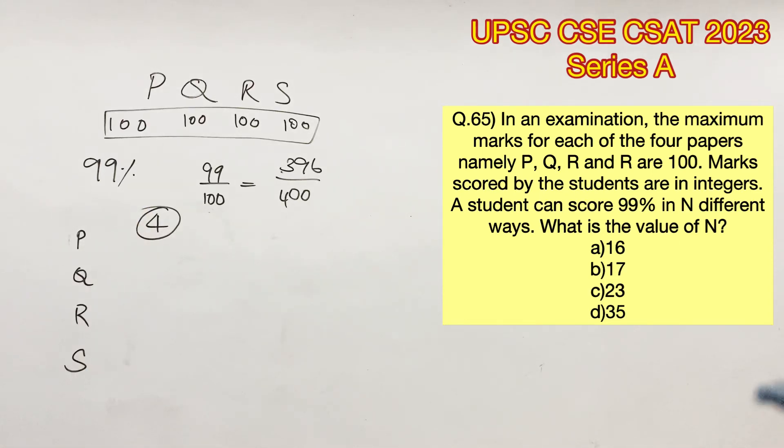We'll have to find the number of ways in which he can lose four marks. First possibility where he might lose all the four marks in just one single paper. That can be either in P, Q, R or S. Therefore, there are four different ways.